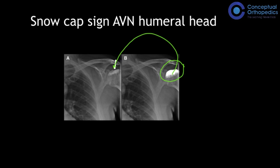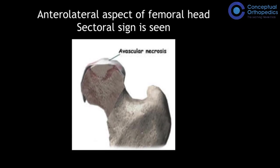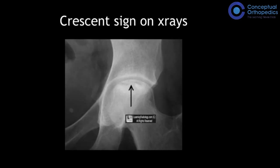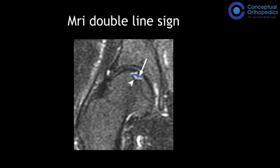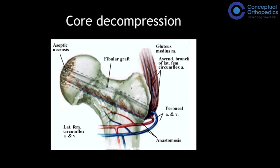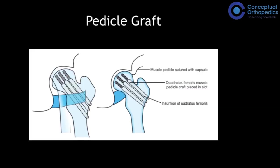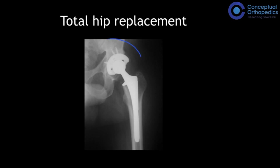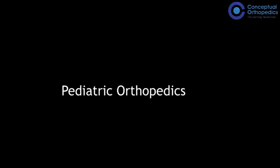The anterolateral aspect of the femoral head is involved in avascular necrosis, producing a crescentic lucency with a surrounding white area — called the crescent sign. On MRI, two thick bands are seen called the double line sign. Treatment options include core decompression (making holes inside the bone), a pedicled graft using muscle, or hip replacement, which is the number one treatment for this condition today.